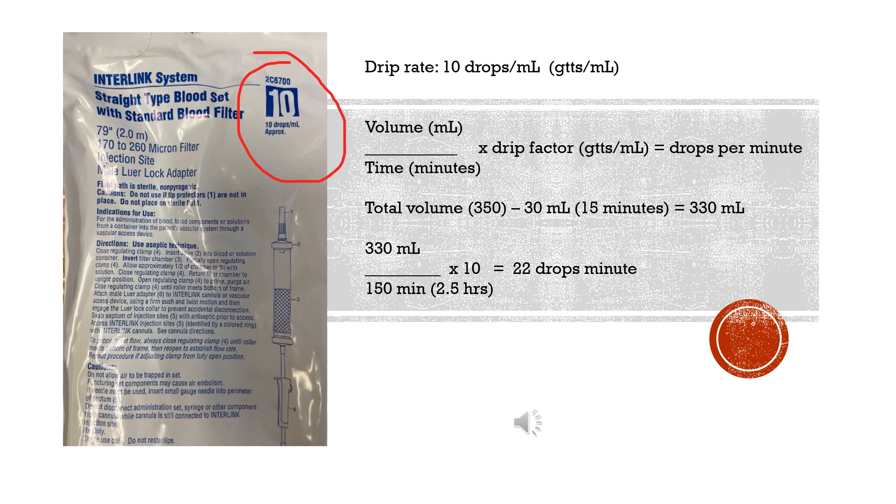Now let's look at what the math would be set to for the rest of your transfusion. Right, so our volume now after the 15 minutes is about approximately 330 mls, what's left. So we're going to divide that by the rest of our transfusion time, which let's say approximately two and a half hours, or 150 minutes.